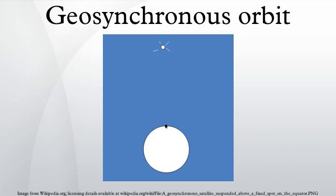Communication satellites are often given geostationary orbits, or close to geostationary, so that the satellite antennas that communicate with them do not have to move, but can be pointed permanently at the fixed location in the sky where the satellite appears.